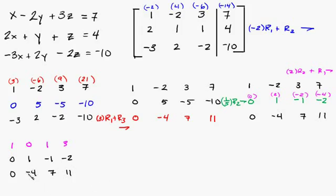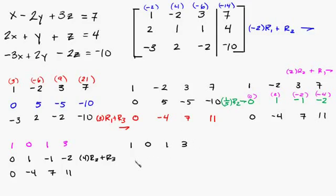Now we want to get a 0 here. So let's multiply this row times 4 plus row 3. So this is going to be 1, 0, 1, 3. And then: 4 times 0 is 0. 4 times 1 is 4. Negative 4. Negative 8.